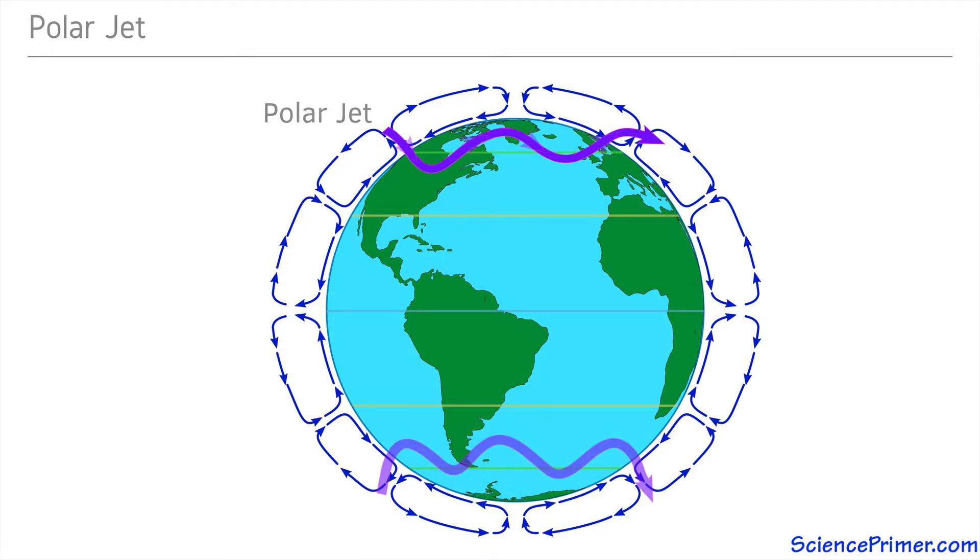There is a polar jet in both the northern and southern hemispheres. The position of the jet streams are not constant. In addition to the meanders north and south, the overall position of each jet stream changes with the seasons following the sun so that both move further south during the winter in the northern hemisphere and north during the winter in the southern hemisphere.